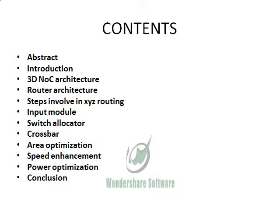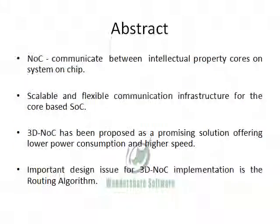These are the contents which I am going to explain today. We know that system on chip is an integrated circuit that integrates all the components of a computer or electronic system into a single chip. Network on chip is a communication subsystem on an integrated circuit, typically between different intellectual property cores in a system on chip. Therefore, network on chip is a scalable and flexible communication infrastructure for core-based system on chip, and the reusability of resources is also very high.